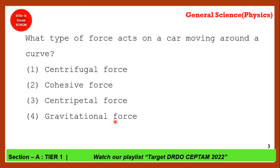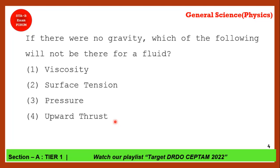What type of force acts on a moving car going around a curve? The answer is centripetal force. Centri means center, petal means seeking — the force seeking inward is called centripetal force, whereas the force seeking outward is called centrifugal force. Option 3 is correct.